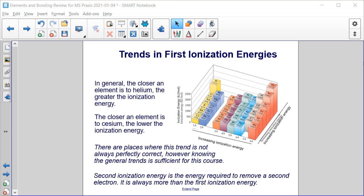In general, the closer an element is to helium, up here in the top right corner, the greater the ionization energy. And the closer the element is to cesium, down here in the bottom left corner, the lower the ionization energy.